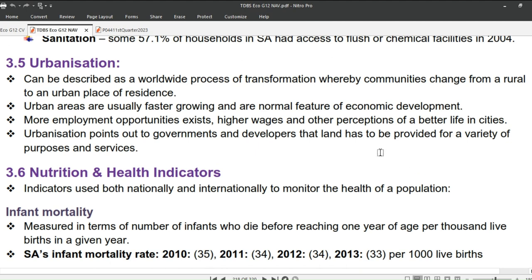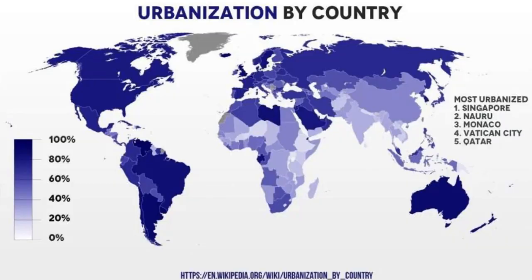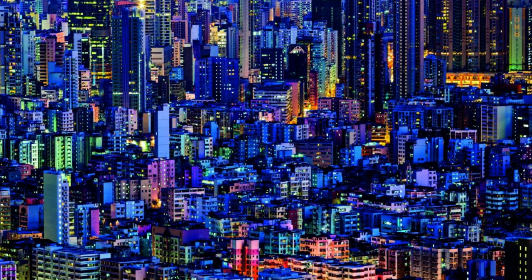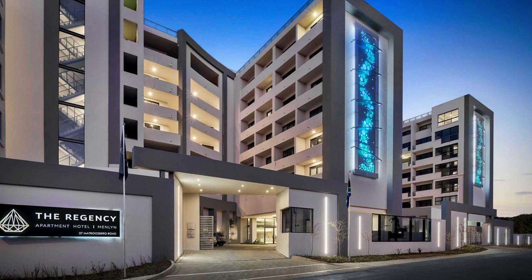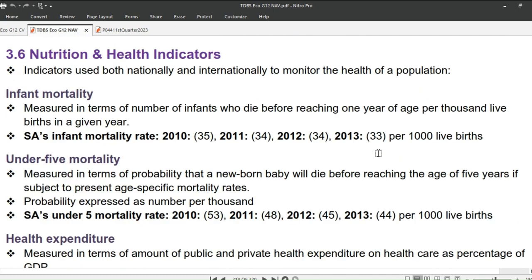We will now look at urbanization. Africa is the least urbanized continent and North America is the highest urbanized continent in the world. Some countries are 100% urbanized, such as Singapore, Nauru, Monaco, Vatican City, and Qatar, meaning they have no rural areas at all. Africa has many people living in rural areas. Urbanization can be described as a worldwide process of transformation whereby communities change from a rural to an urban place of residence. Urban areas are usually faster growing, with more employment opportunities, higher wages, and perceptions of a better life. Urbanization signals to governments and developers that land must be provided for a variety of purposes and services.